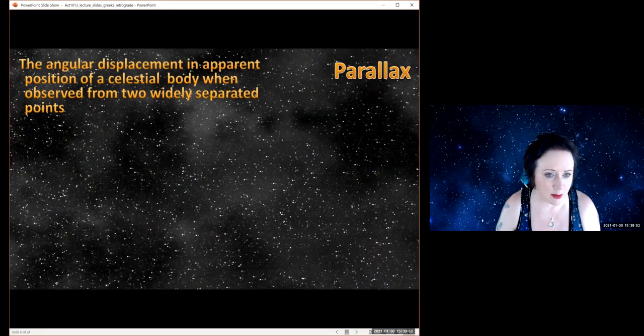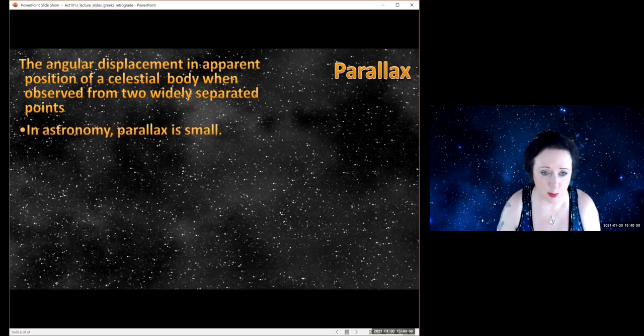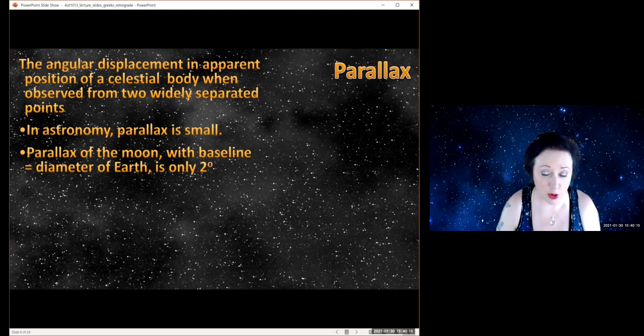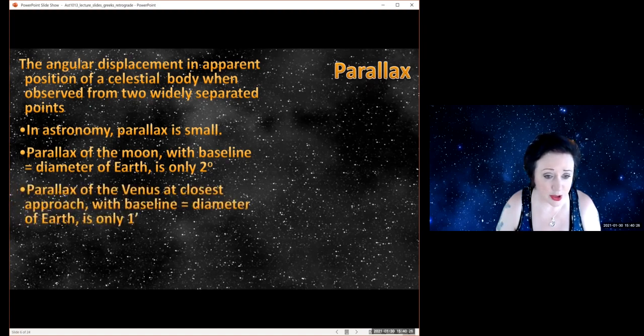We have this angular displacement that is what you get when you observe something from two widely separated points. The problem is that that angle is very small, and at some point it becomes unnoticeable. Just to put this in perspective, if you are standing on one side of the Earth compared to the other, the apparent position of the moon relative to the background stars is only different by two degrees. The moon is about half a degree across, so it's a really small angle. If we then go to Venus, which is at its closest point—Venus is changing its distance to us all the time, but at its closest point—and we use the whole of the Earth as our baseline, it's only one arc minute across. Basically, that means that with the naked eye, you would not notice a difference in position.